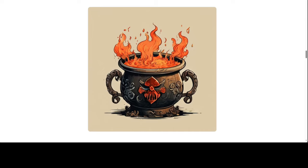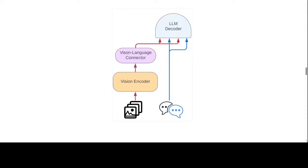If you look at the architecture, they have departed from the idefics1 architecture and simplified the integration of visual features into the language backbone. The images are fed to the vision encoder, followed by a learned perceiver pooling and an MLP modality projection. That pooled sequence is then concatenated with text embeddings to obtain an interleaved sequence of images and text. All these improvements along with a better pre-trained backbone yielded a significant jump in performance over idefics1, and this model is even 10 times smaller.